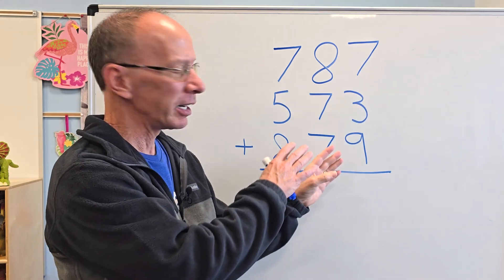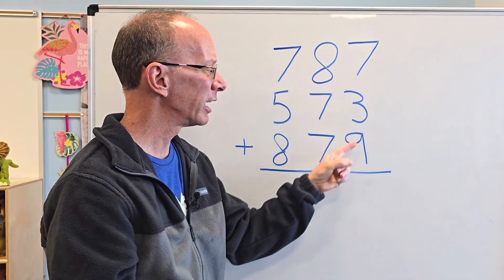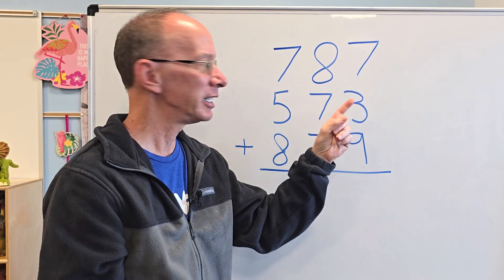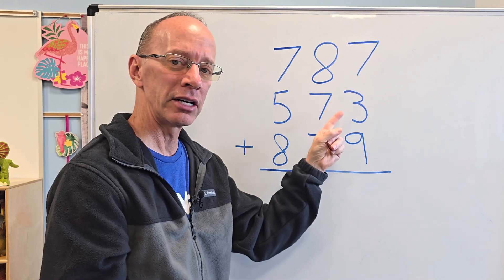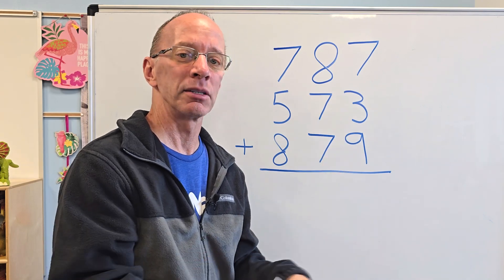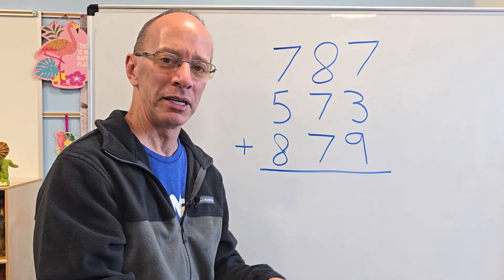And then I try to pick out numbers that might be easy for me to add. So I could take, you see, nine plus three would be 12, and then 12 and seven would be 19, or seven plus three equals 10, and 10 plus nine, 19. Whatever you like. Sometimes you have some favorites, but it all comes out to be the same answer.